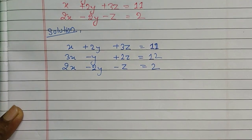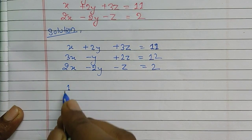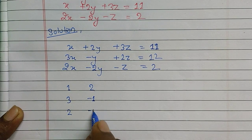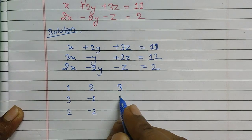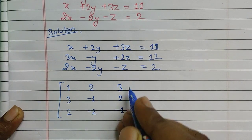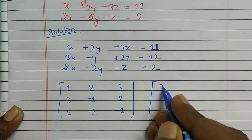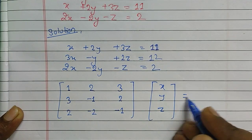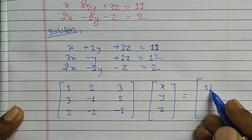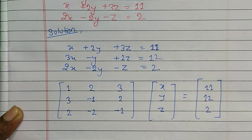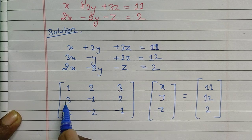Now let's write these equations in matrix form. The coefficient matrix is written as rows [1, 2, 3], [3, -1, 2], [2, -2, -1], and the right-hand side column vector is [11, 12, 2], giving us the augmented matrix for x, y, z.